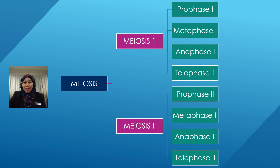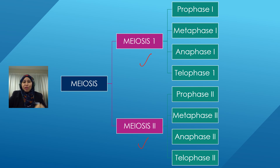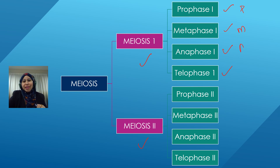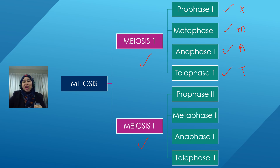Unlike mitosis, meiosis is divided into two stages: meiosis 1 and meiosis 2. For meiosis 1, it is divided into four sub-stages: prophase 1, metaphase 1, anaphase 1, and telophase 1. For meiosis 2, it is also further divided into four sub-stages: prophase 2, metaphase 2, anaphase 2, and telophase 2, also denoted as PMAT.